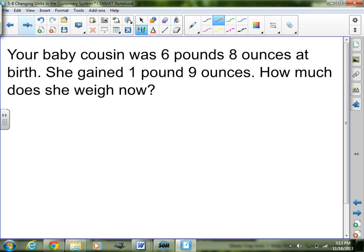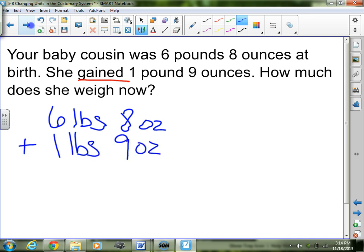Here's another question. Your baby cousin was 6 pounds 8 ounces at birth. She gained 1 pound 9 ounces. How much does she weigh now? So since we're talking about gaining weight, I know I'm going to need to add. So that's 6 pounds 8 ounces plus 1 pound 9 ounces.